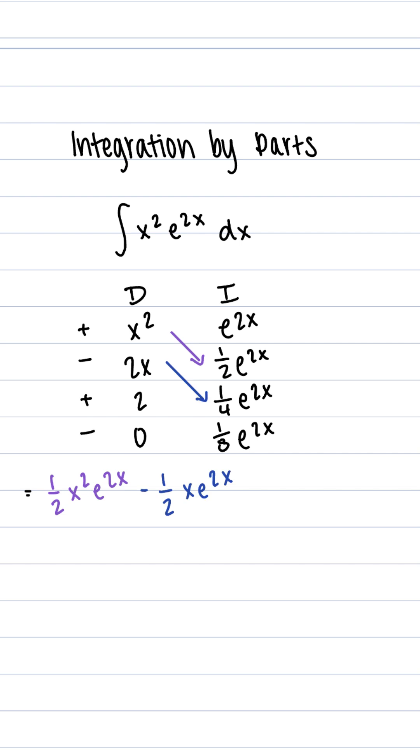Our second sign becomes negative, 2x times 1 fourth e to the 2x, which simplifies to 1 half x e to the 2x.